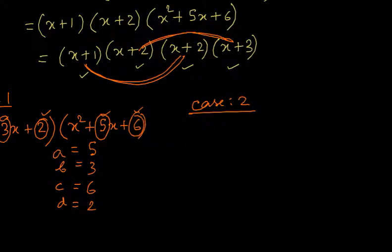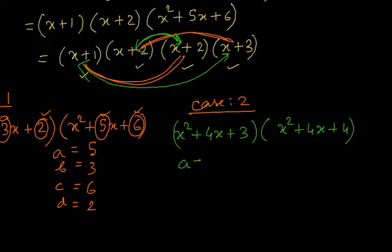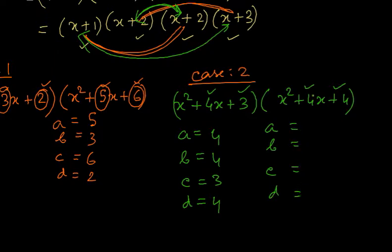Another case is (X+1)(X+3) and (X+2)(X+2). So (X+1)(X+3) gives X² + 4X + 3, and (X+2)(X+2) gives X² + 4X + 4. Another combination of A, B, C, D will be: A = 4, B = 4, C = 3, D = 4. And another set: A = 4, B = 4, C = 4, D = 3.